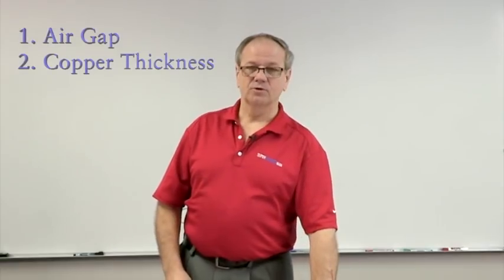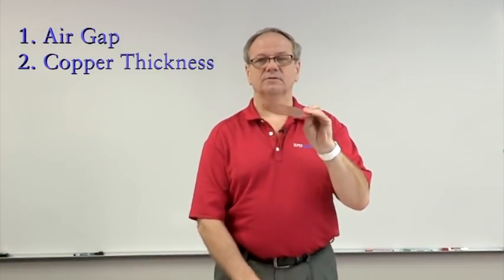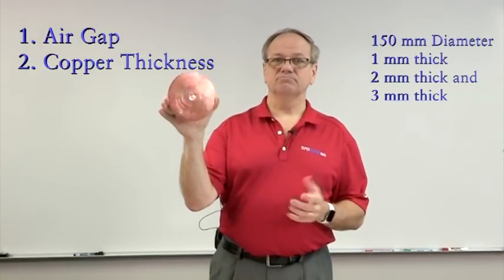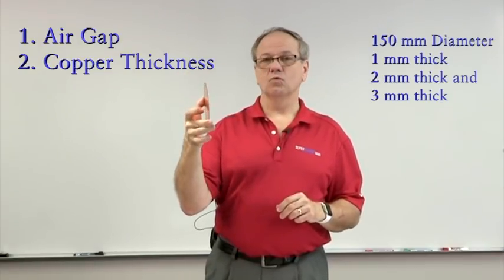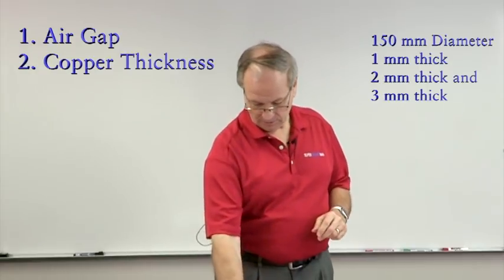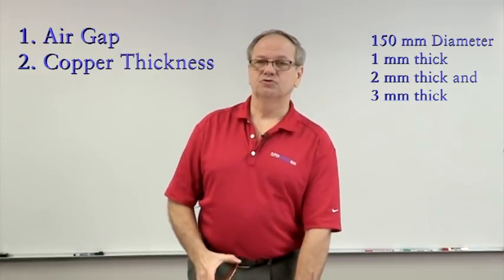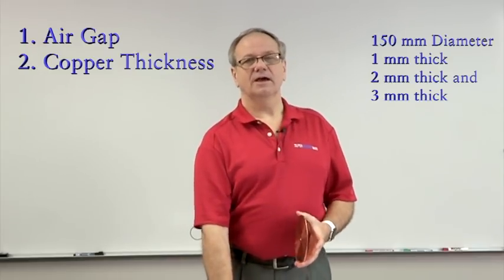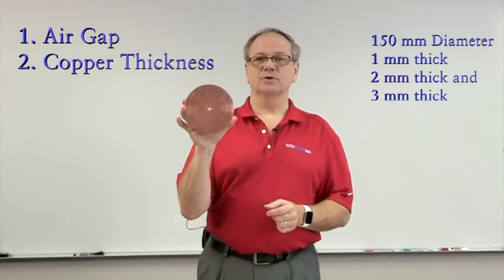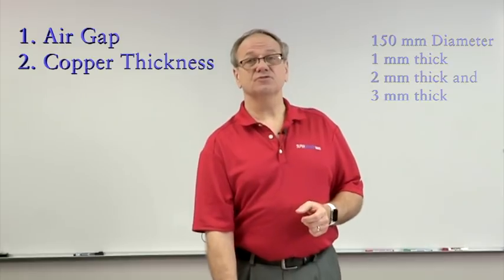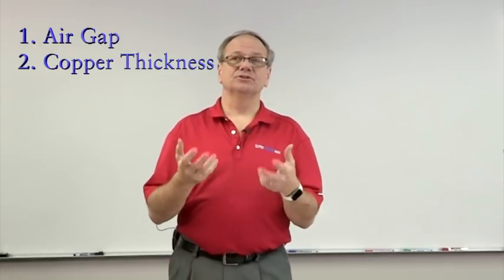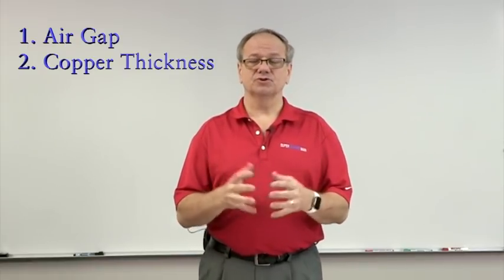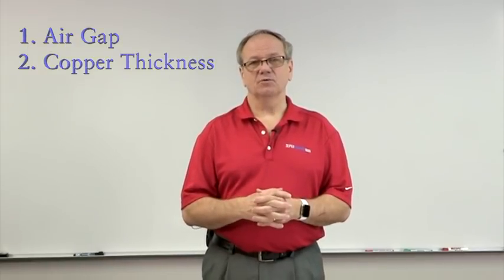The second factor is copper thickness. We have copper discs that are 6 inches in diameter — 150 millimeters — and 1 millimeter thick. Then we have a 2 millimeter thick copper plate, same size, and one that's 3 millimeters thick. This gives us a variable: how much different is the effect with 1, 2, or 3 millimeter thick copper? That gives us enough data points to evaluate.